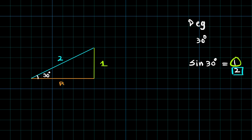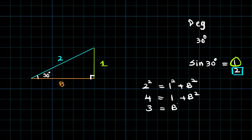Can I calculate the base? Of course, because we are dealing with a right-angled triangle. 2 squared equals 1 squared plus b squared. 4 equals 1 plus b squared. 3 equals b squared. Therefore, b comes out to be square root of 3. So the value of the base is square root of 3.